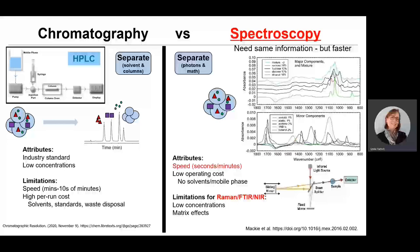Chromatography versus spectroscopy — I'll briefly compare these approaches to the characterization of mixtures. In chromatography, the constituents of a complex sample are physically separated by entraining the sample in a solvent mobile phase and flowing it through a column or stationary phase. The separated components are detected as they flow over a suitable detector. The axis on a chromatogram is time, and the peaks represent the separated pure components. Spectroscopy, on the other hand, relies on photons to gather a spectral trace and mathematical analysis to separate the components.